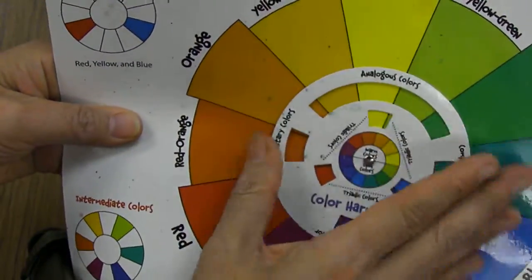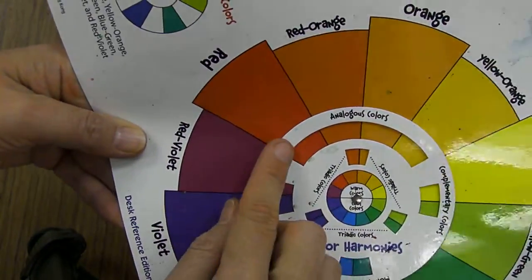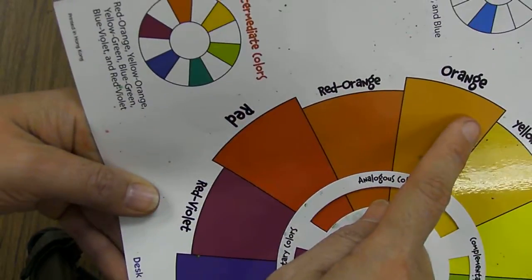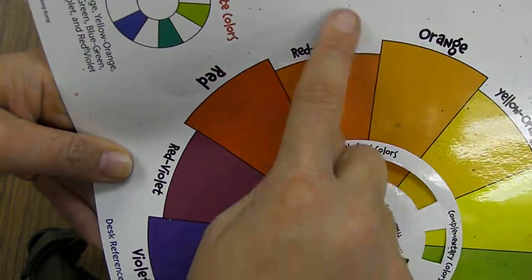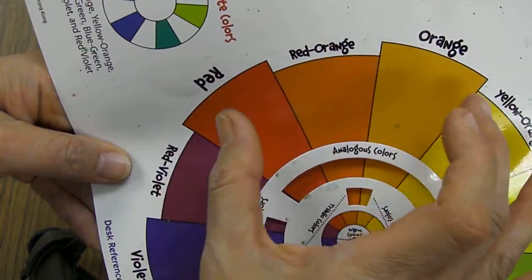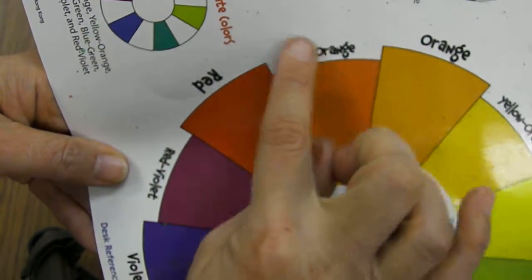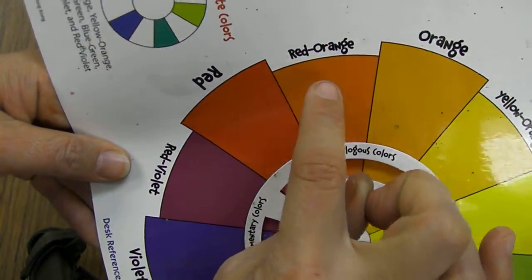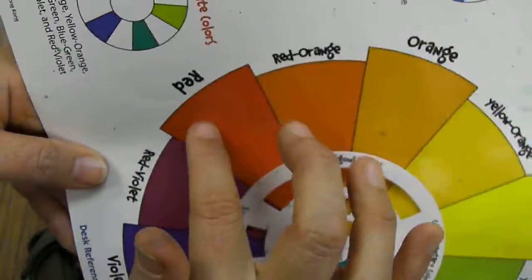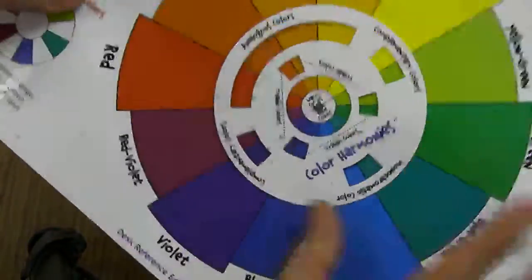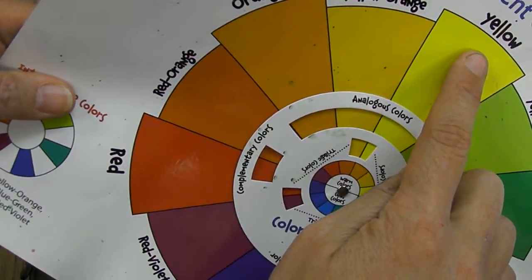If I spin this around, and if I'm thinking about a haunted house and I want it to look like a scary sunset, I might choose red, red-orange, and orange. Usually an analogous set has one primary, one secondary, and an intermediate color in between. An intermediate color has a primary and secondary color mixed together, so it always has two colors in its name, and they're also known as tertiary colors. You don't have to use that set—you could use orange, yellow-orange, and yellow.